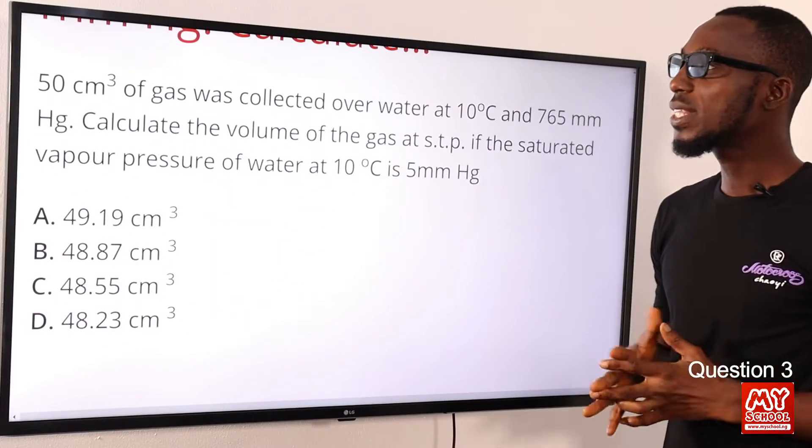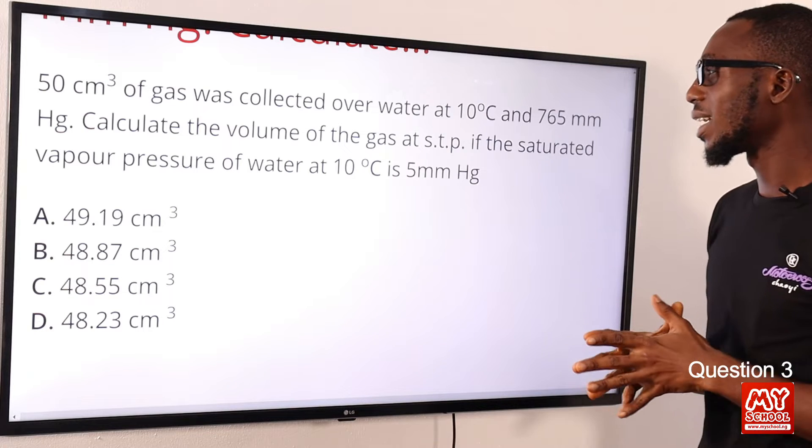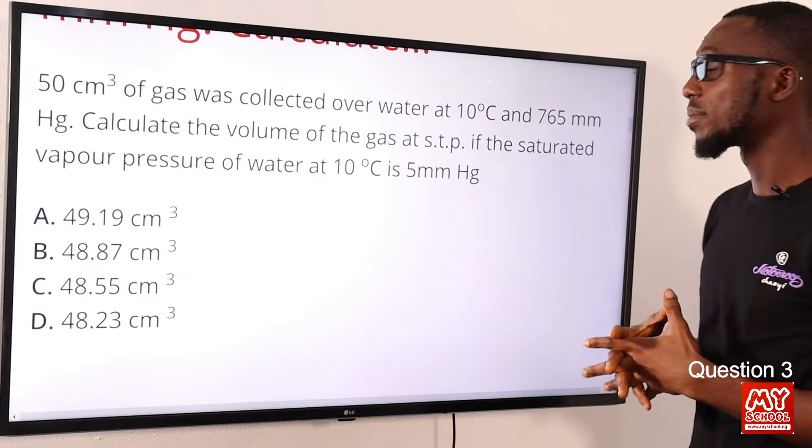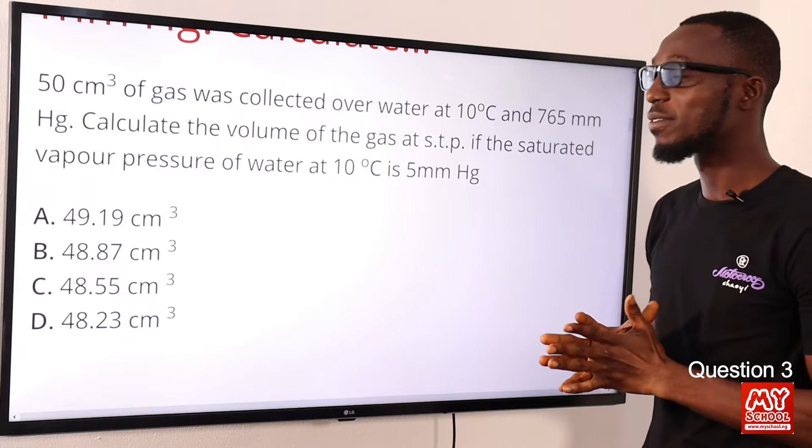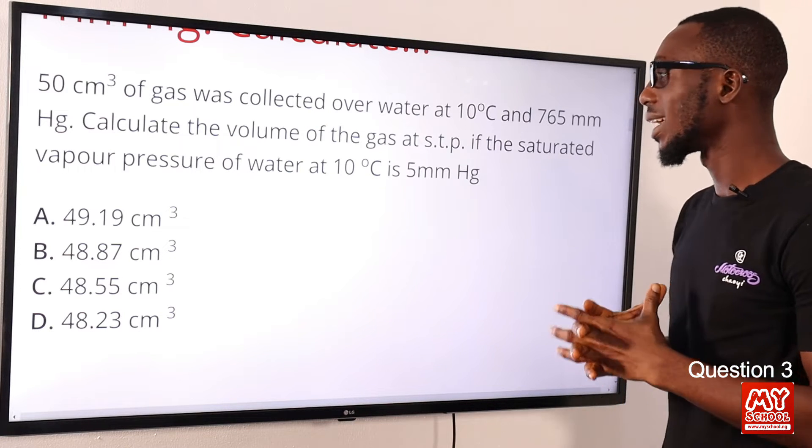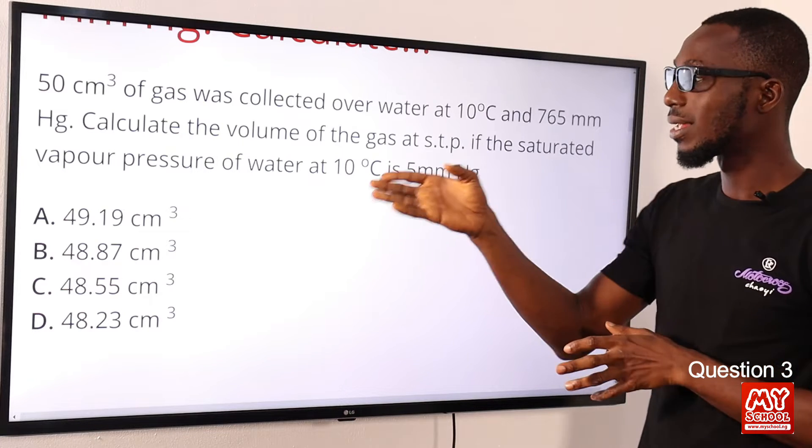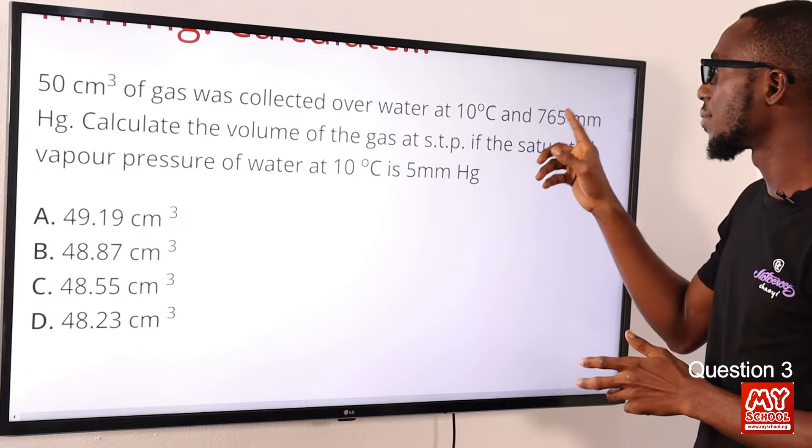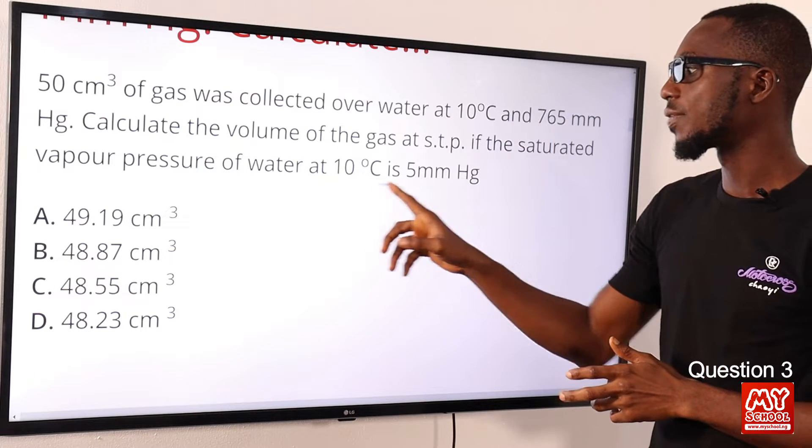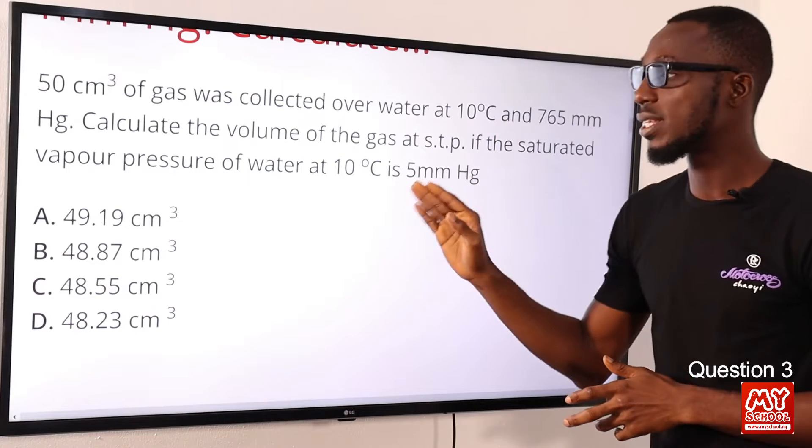Question 3: 50 cm³ of gas was collected over water at 10°C and 765 mmHg. Calculate the volume of the gas at standard temperature and pressure if the saturated vapor pressure of water at that temperature is 5 mmHg. So you just have to take away this vapor pressure—765 minus 5, which means 760 mmHg for the gas.